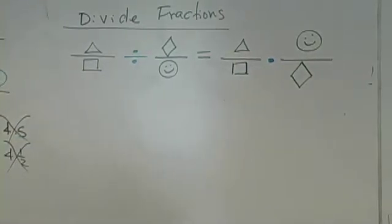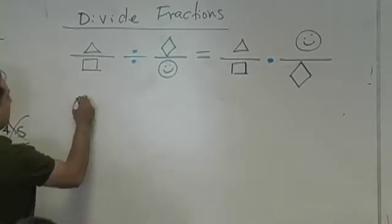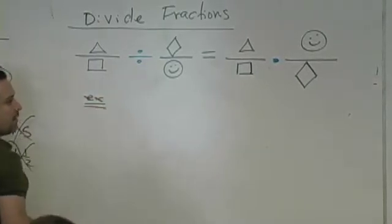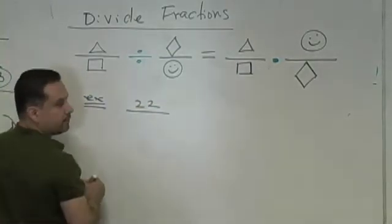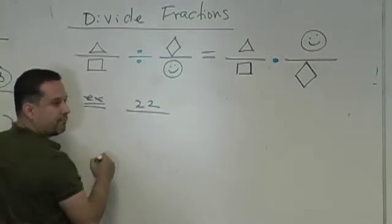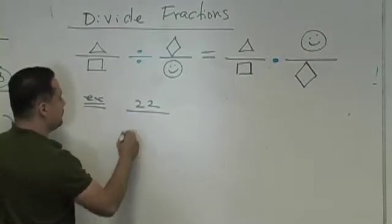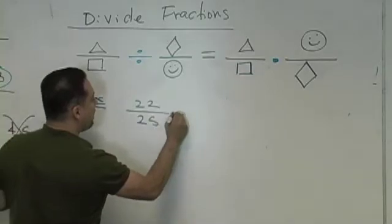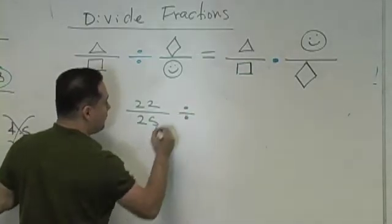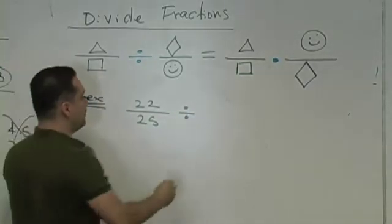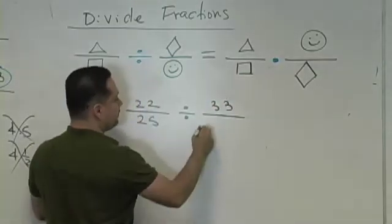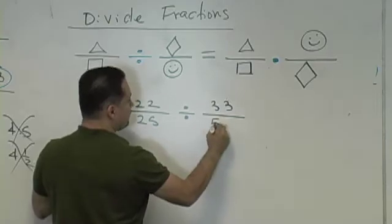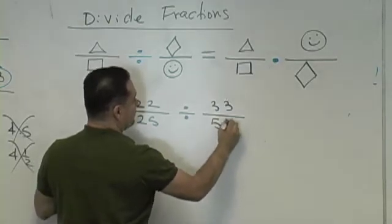Okay, let's do some problems. For example, they gave you 22 over 25 divided by 33 over 50.